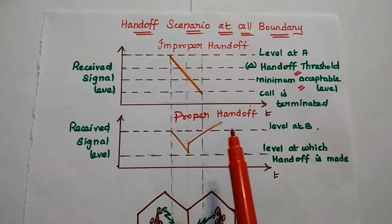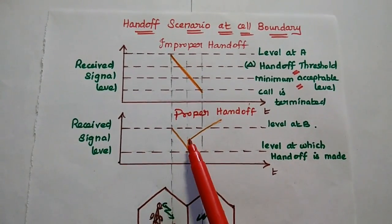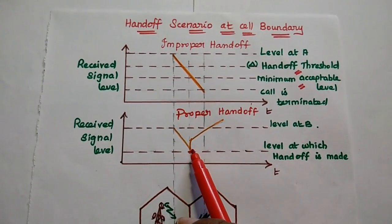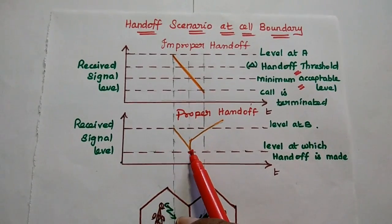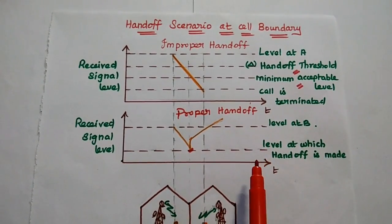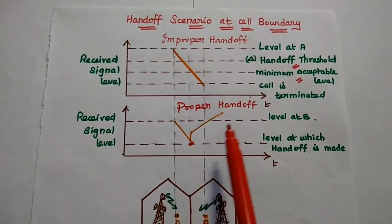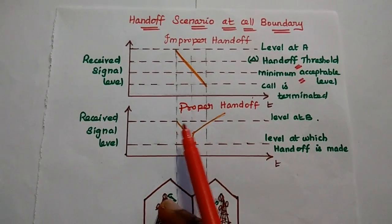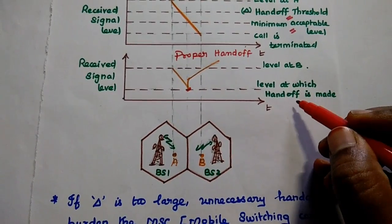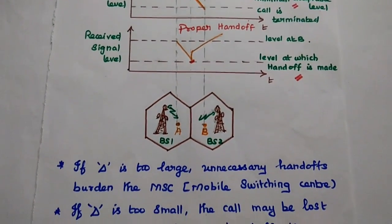In the proper handoff scenario, at the boundary the signal level reaches its threshold value and handoff initiation begins. Because of this handoff operation, the mobile user continues to receive service uninterruptedly. At point B, it reaches its maximum received signal level — the call continues. This is called proper handoff. The threshold value is very important to make a proper handoff at the correct time.